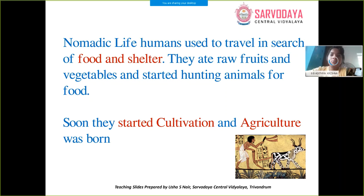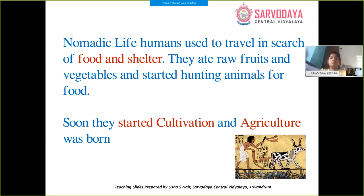During nomadic times, humans used to travel in search of food and shelter. They ate raw fruits and vegetables and hunted animals for food — nobody was going to provide food at their houses. After years passed, cultivation started and agriculture was born.